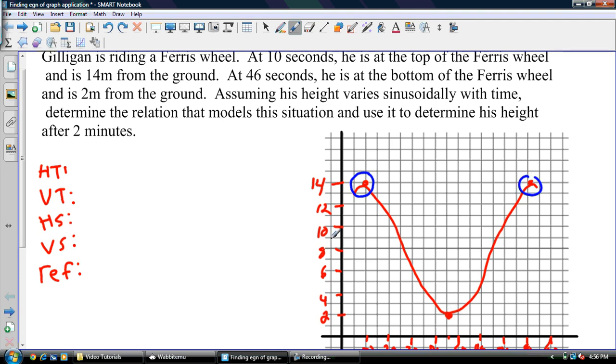Generally, with these problems, you want to do them in terms of sine and cosine. Generally, I would choose the first starting point, and I'd choose a max. You could choose this one as well, but generally I'd choose a max because if I choose a max, I don't have to worry about a reflection for cosine. Next, what we have to do is find our sinusoidal axis.